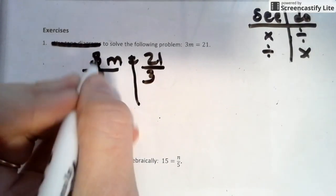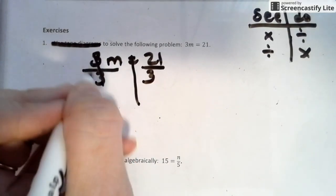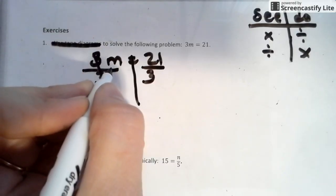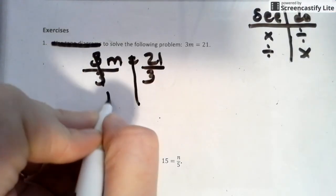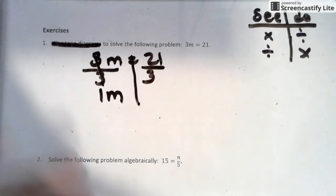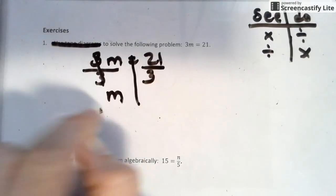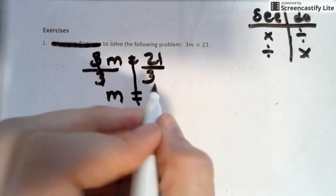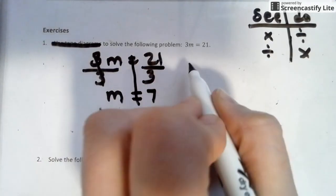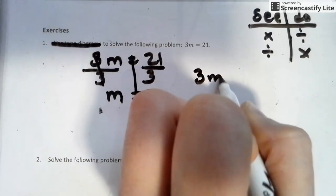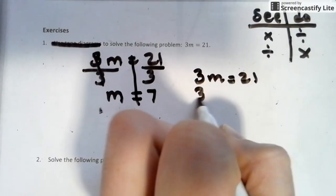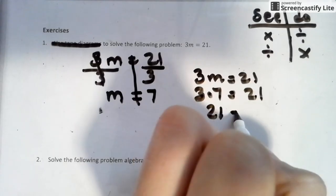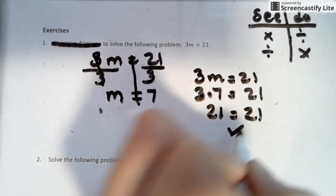Cross them out. This isn't crossing it out to make 0. This 3 divided by 3 is 1. But how many m's do we see? We see 1. We don't have to have a 1 in front of it to know that there's 1 m there. 21 divided by 3, we kept it balanced, we get 7. We check it. We put 3m equals 21. 3 times 7 equals 21. 21 equals 21. That is a check.